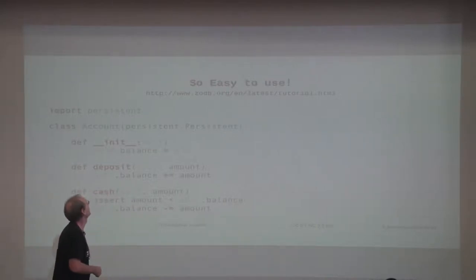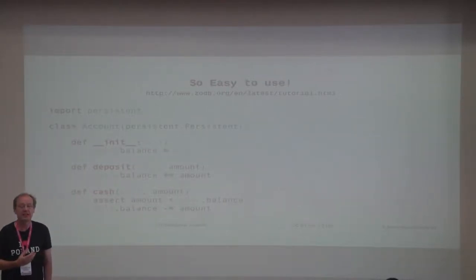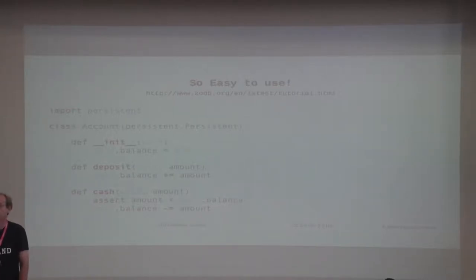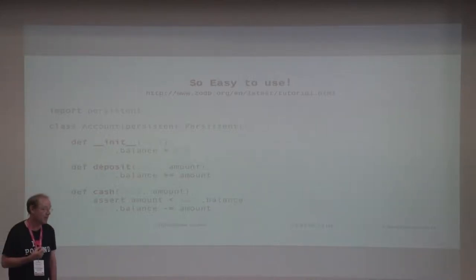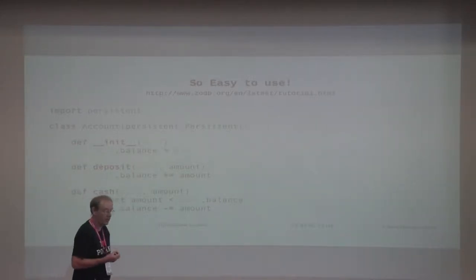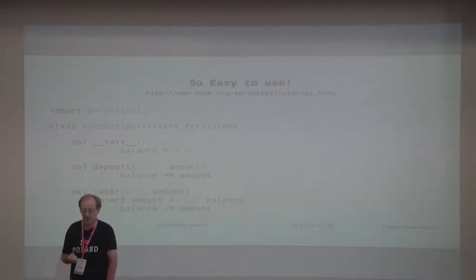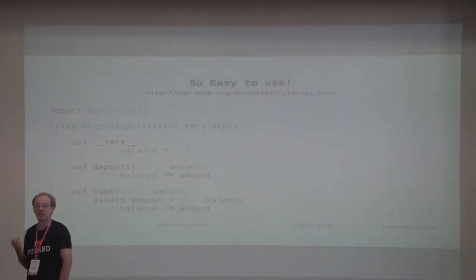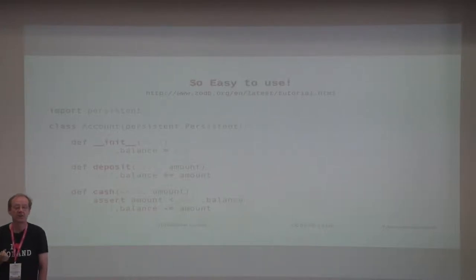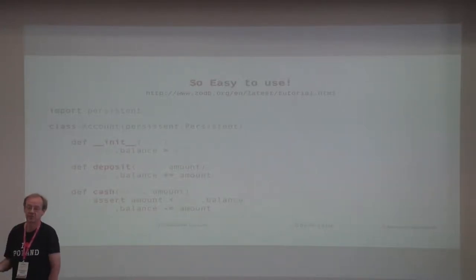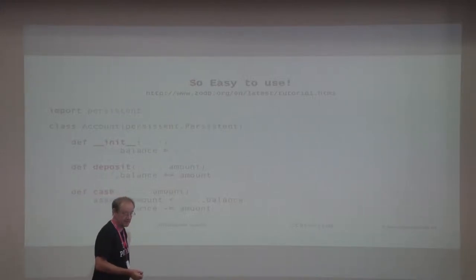Here we have a simple account object. You can initialize it — it'll set the balance to zero. You can add money, make a deposit, or withdraw money if there's enough. To make this object persistent, all you have to do is subclass off of the ZeoDB class Persistent. They also have persistent dictionaries and persistent sets you can subclass off of. Very easy to use.